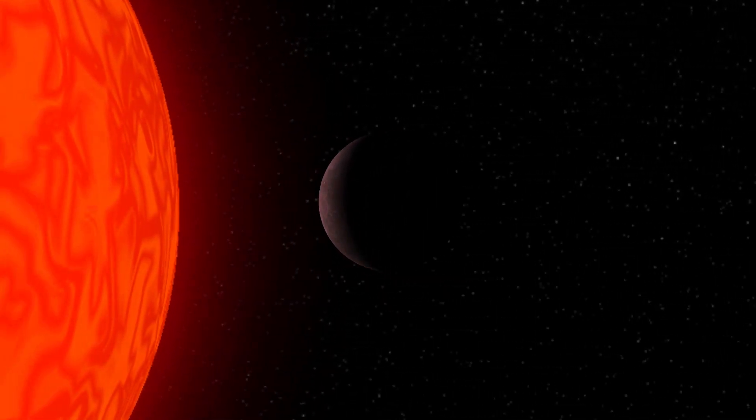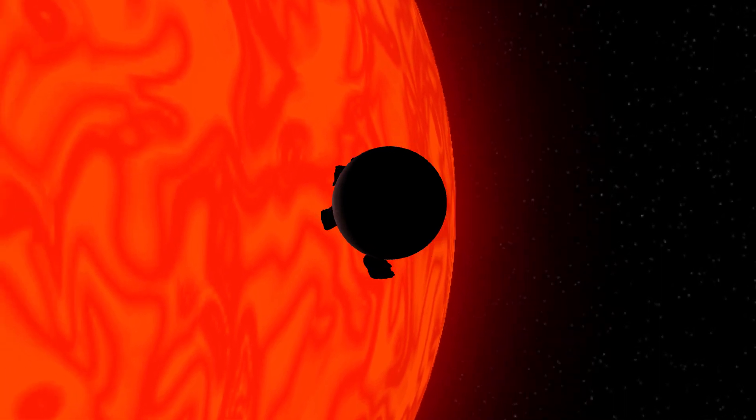This could give us some insight into what the Earth might become in about 5 billion years when our sun turns into a red giant and grows to consume Mercury and Venus. Maybe Mercury is trying to tell us something about our future. Maybe there's a message in the data.